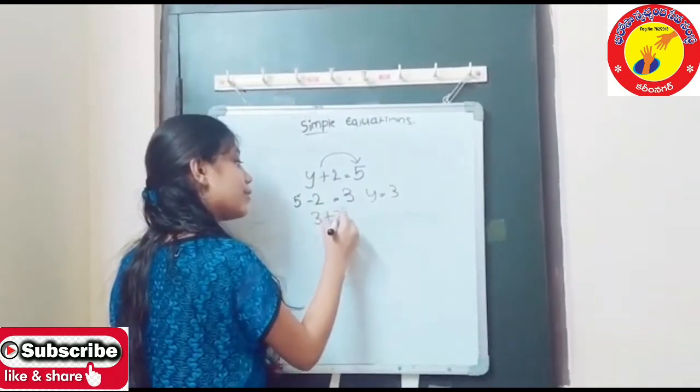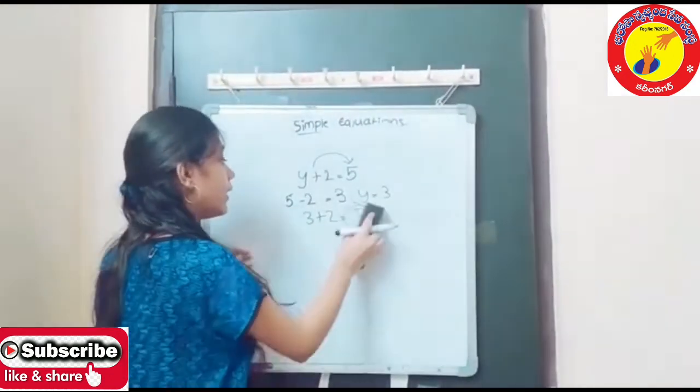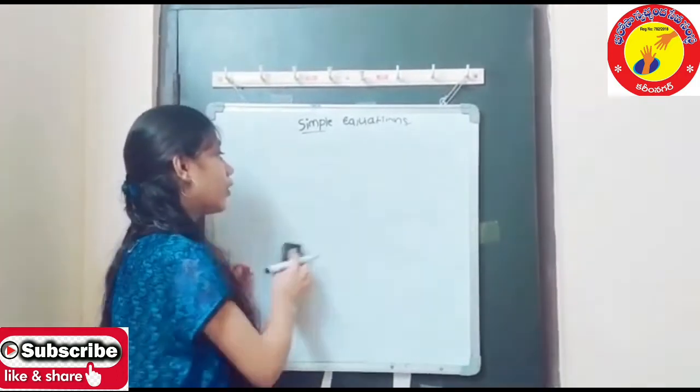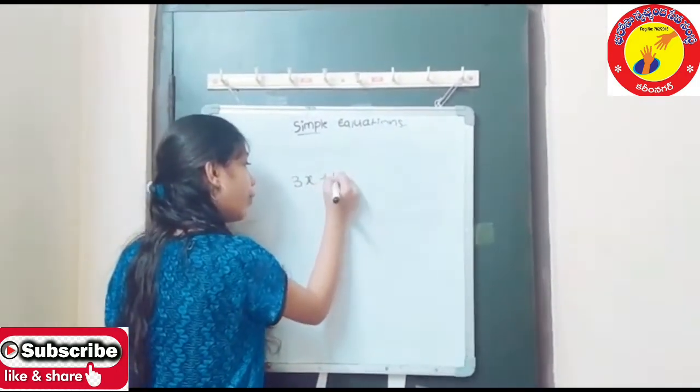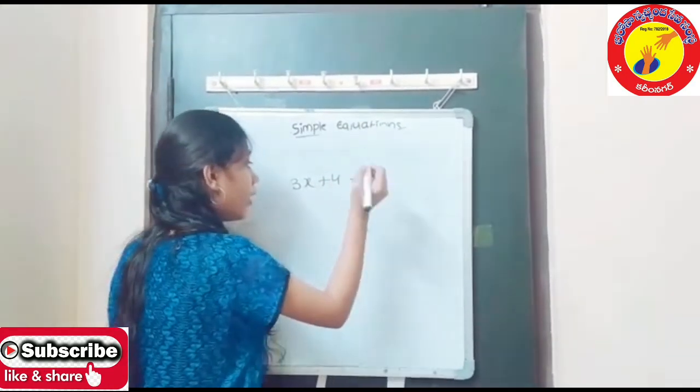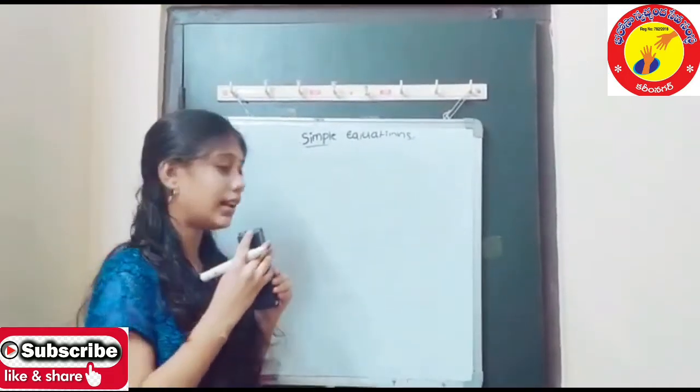3 plus 2 is equals to 5. When we go the next level, it will be harder. The questions be like 3X plus 4 is equals to 16.